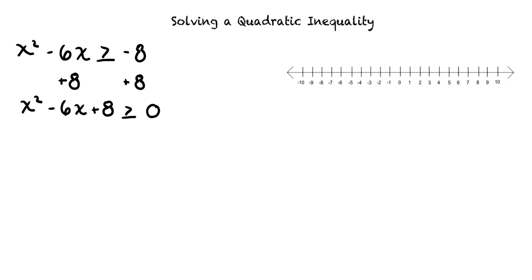Next, we will factor the quadratic on the left side of the inequality. This results in (x - 2)(x - 4) ≥ 0. Correct.